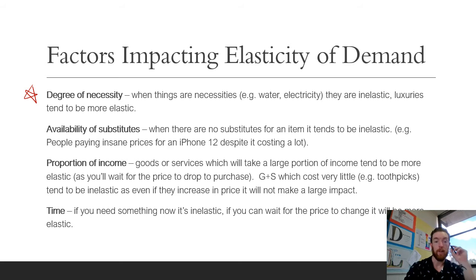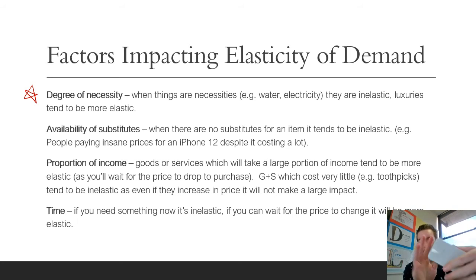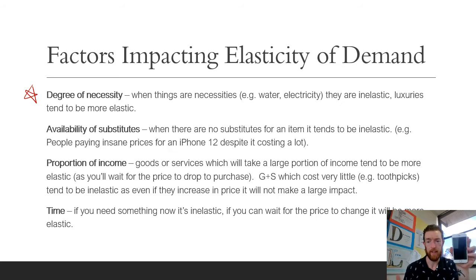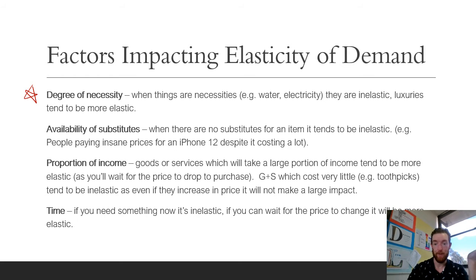The availability of substitutes — when there are no substitutes for an item, it tends to be inelastic. For example, people pay high prices for an iPhone despite it costing a lot, because they don't see other phones as substitutes, so iPhones tend to be inelastic. Whereas with something like loaves of bread, there are a million different options and you can go for whichever is cheapest, making demand more elastic because substitutes are available.